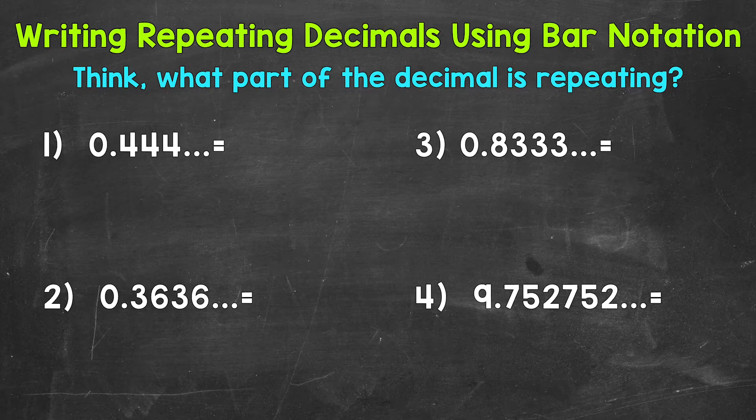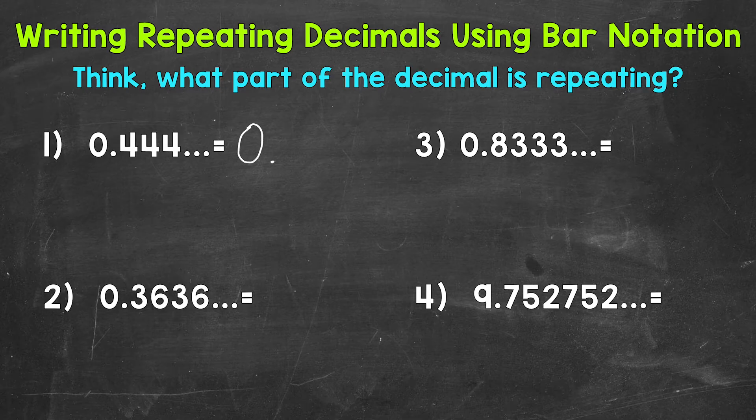For number one, we have a repeating 4, so we need a bar over that digit. We would write this as 0 to show that we do not have any whole numbers, the decimal, and then the 4 with a bar over it to show that it repeats. That's how you write 0.4 repeating using bar notation, and it's as simple as that.